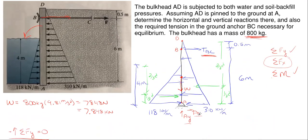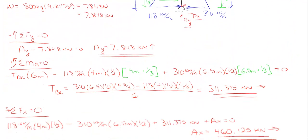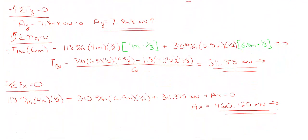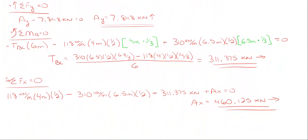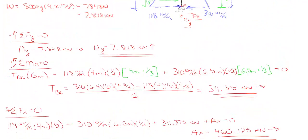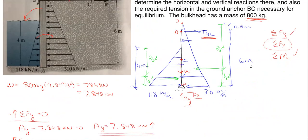Does it make sense that A_x is larger than the tension anchor T_BC? Yes, because there is much more soil pressure down near the base than up at B. The soil pressure is trying to rotate the bulkhead back, and the water actually assists in this case. So the final results are: A_y equals 7.848 kilonewtons upward, T_BC equals 311.375 kilonewtons, and A_x equals 460.125 kilonewtons to the right.